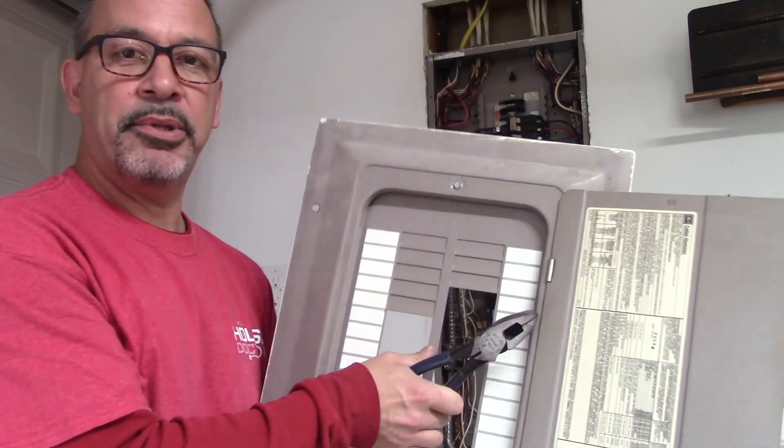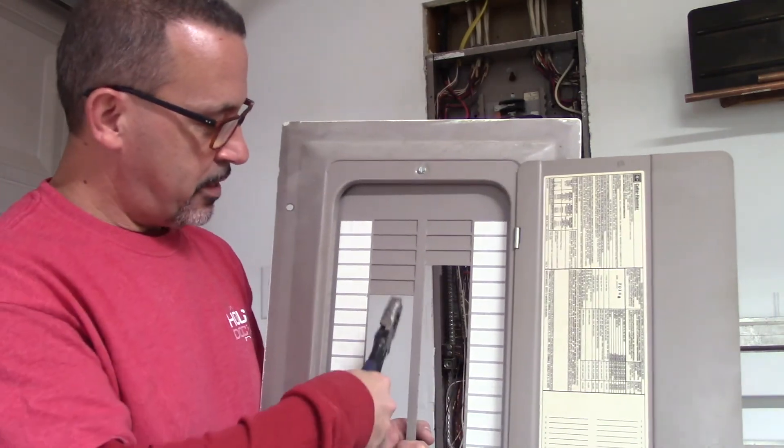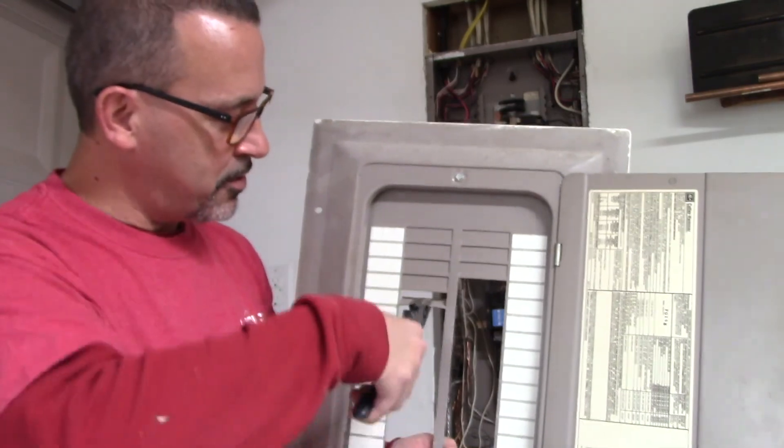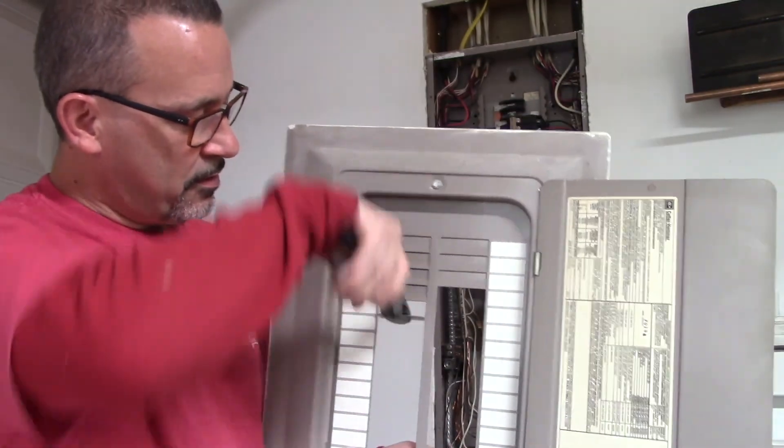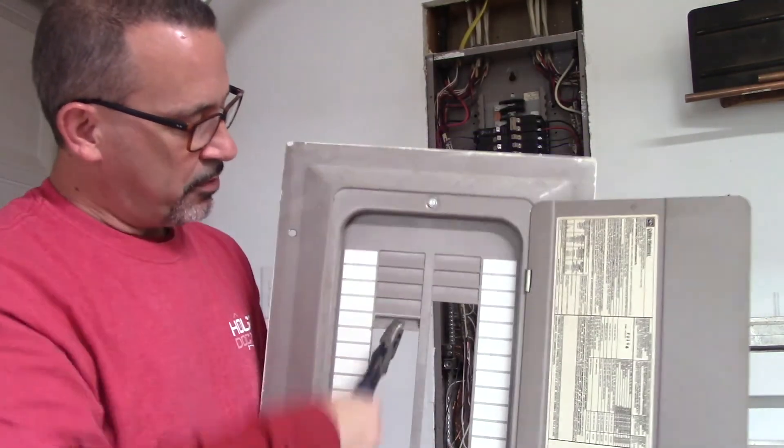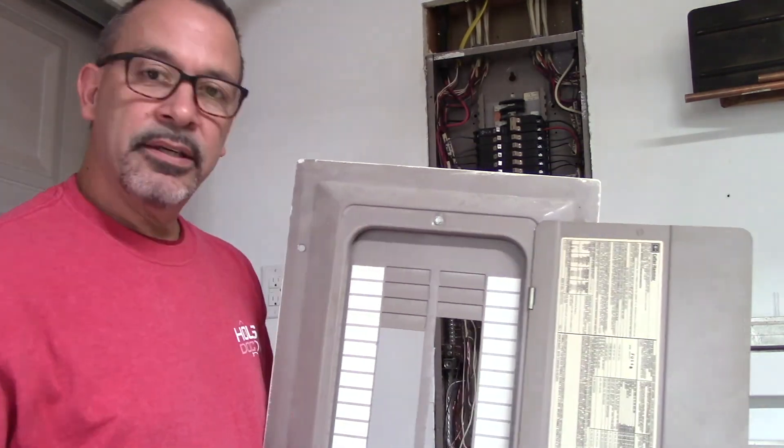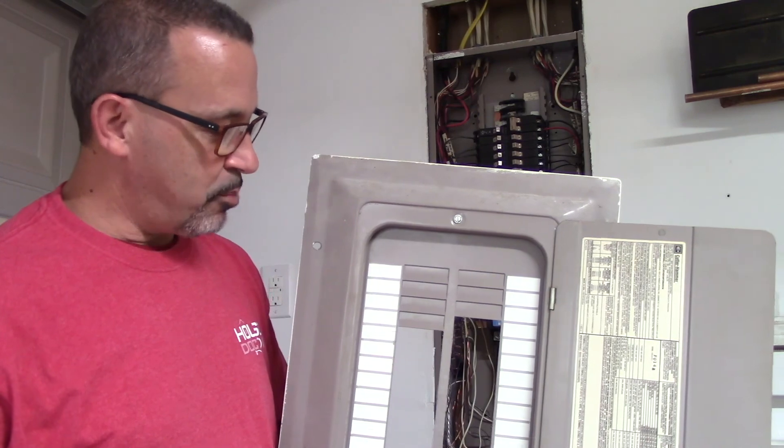You didn't run away just yet, did you? I forgot, before I put the panel cover back on, I have to bust off one of these tabs. You just grab it with a pair of pliers, twist it a couple of times, and that'll give you the slot for the breaker I just put in.